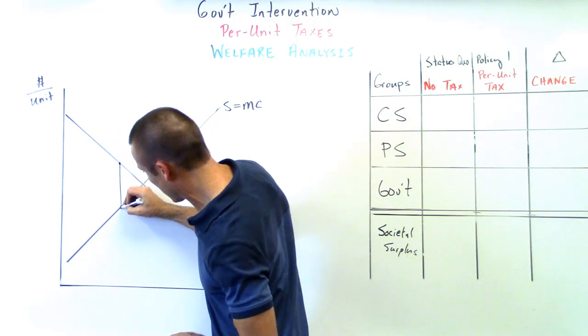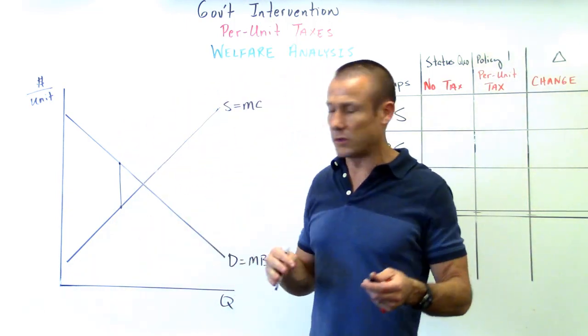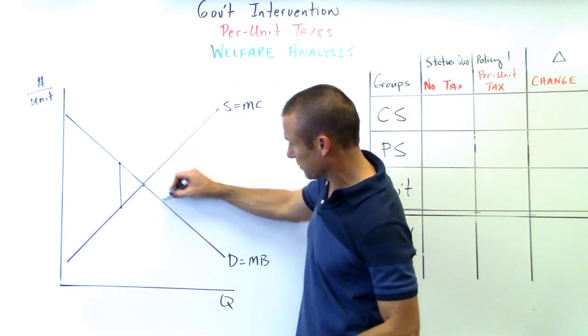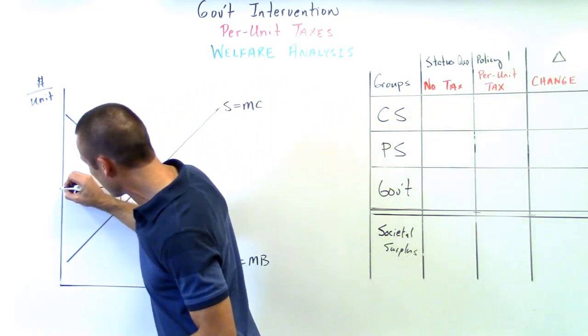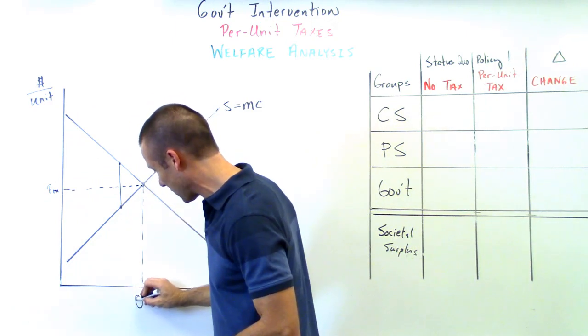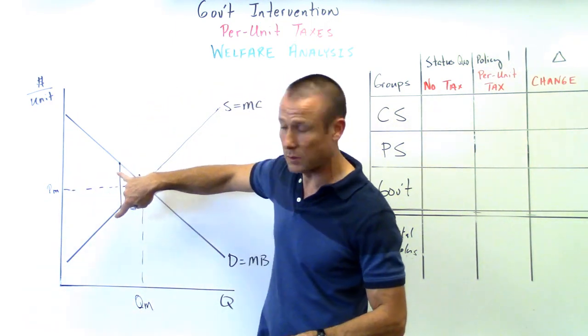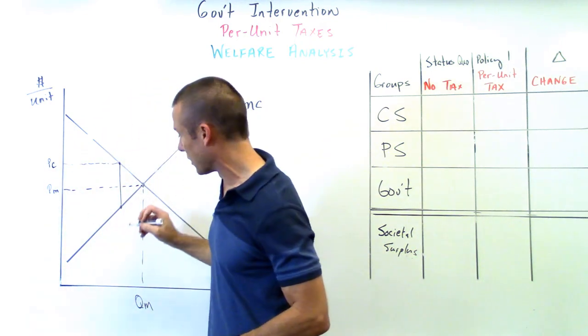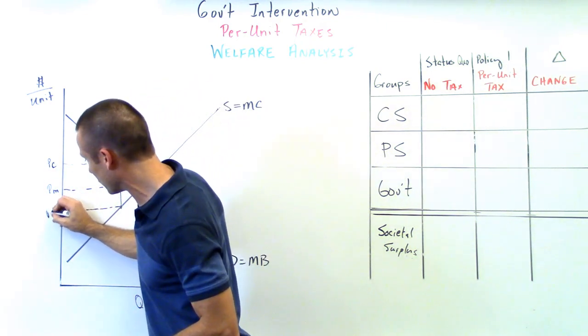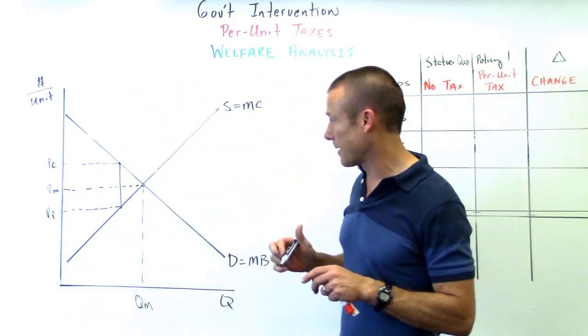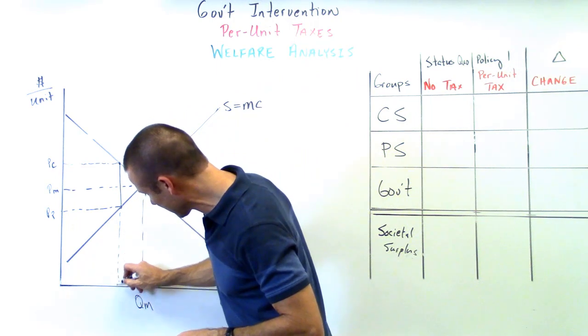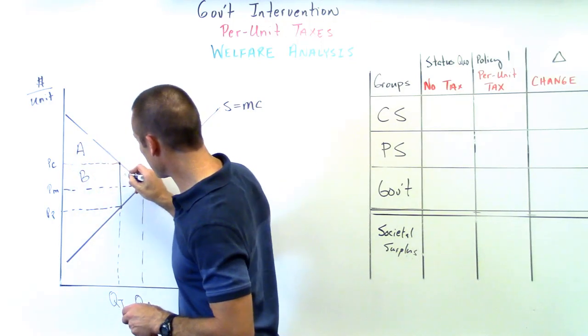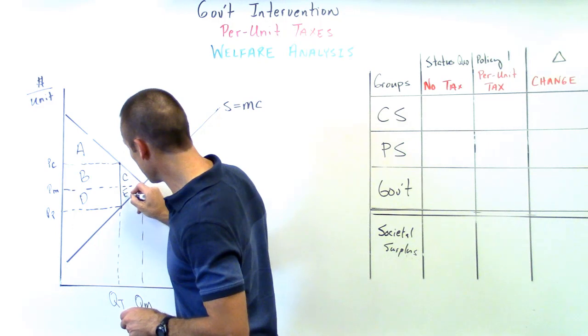That tax wedge comes in, it's going to slide into place. Let's get this thing labeled up. First I'm going to ignore the tax wedge and say what would happen if the market was left alone. The intersection of supply and demand would give us our price market and our quantity market. Once that tax wedge has been put in place, the price the consumer is going to pay is going up - price consumer - and the price the producer is going to receive is going down. I'm going to label this a, b, c, d, e, f.